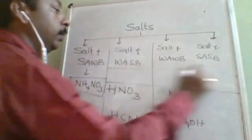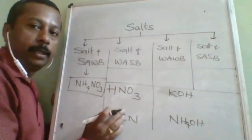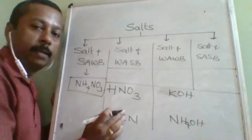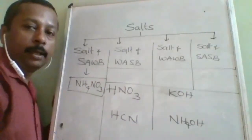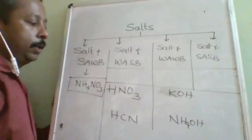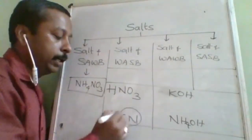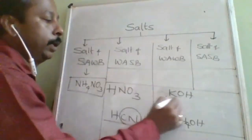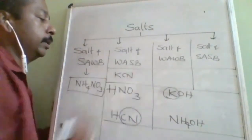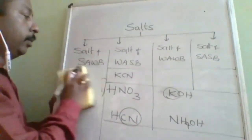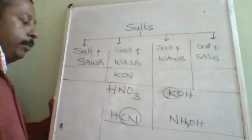For weak acid and strong base (WA+SB), select HCN as the weak acid and KOH as the strong base. Take CN⁻ from the acid and K⁺ from the base — so KCN is an example of a salt of weak acid and strong base.